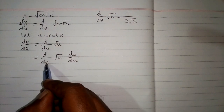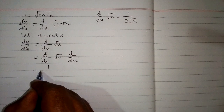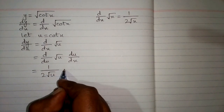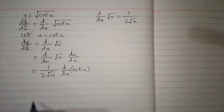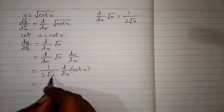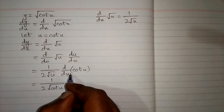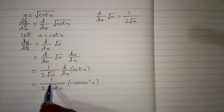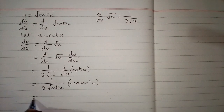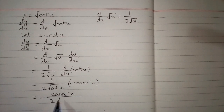Now this variable and this variable are same so we can apply this formula. So the derivative of square root of u is 1 upon 2 square root of u, multiplied by the derivative of u, and u is cot x. So we have dy by dx of cot x. Now we put the value of u. So we have 1 upon 2 square root of cot x, multiplied by the derivative of cot x which is minus cosec squared x. Now we multiply 1 by minus cosec squared x. So we have minus cosec squared x upon 2 square root of cot x, and this is the required answer.